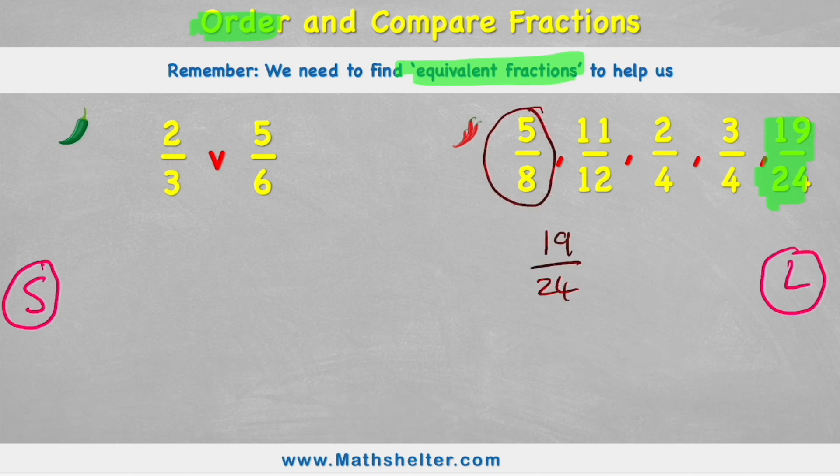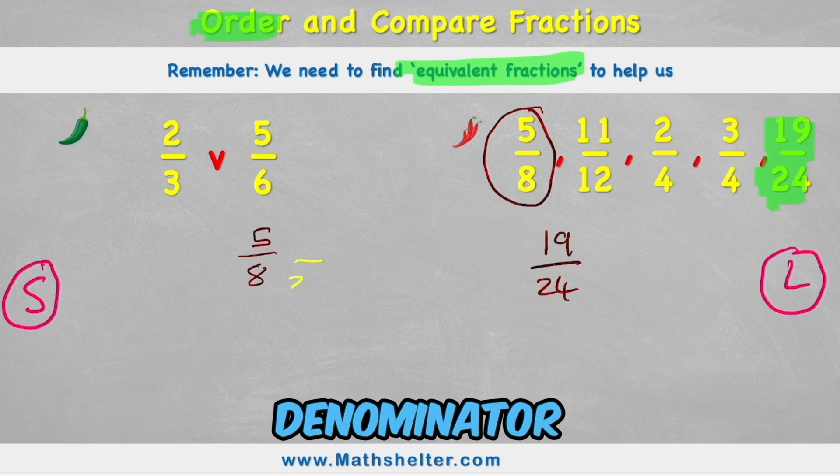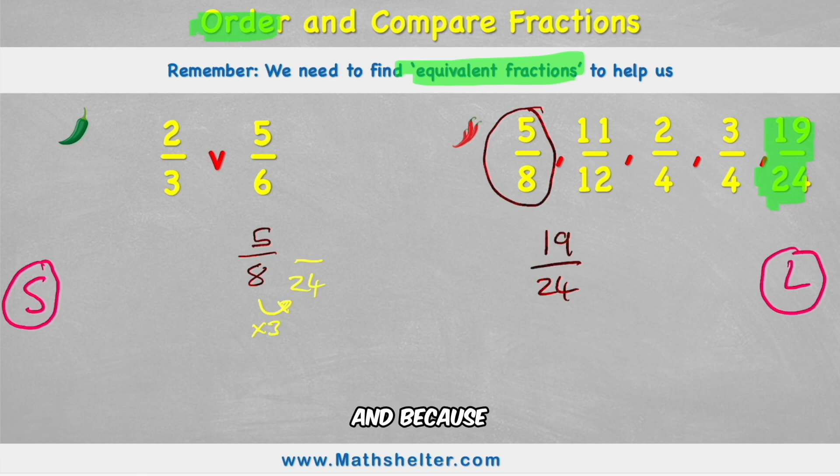So we'll keep 19 24ths as it is. Now let's have a look at this first example, 5 8ths. So let's put our 5 8ths in place. But we're trying to find an equivalent fraction with the value of a denominator of 24. So how did we get from 8 to 24? Well, we multiply by 3. And because we've done that to our denominator, to keep it equivalent, I now need to do that to the numerator as well. And 5 times 3 is 15. So my new equivalent fraction of 5 8ths is 15 24ths. So now I can get rid of my 5 8ths.